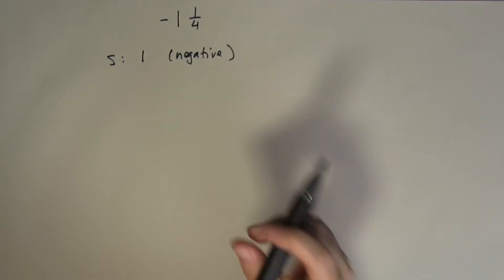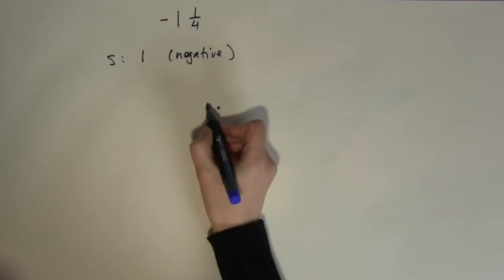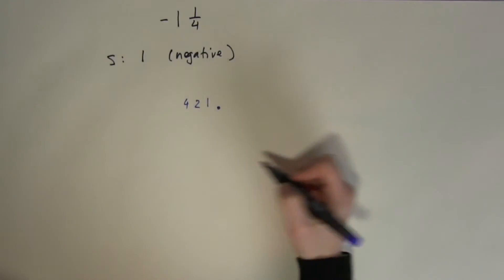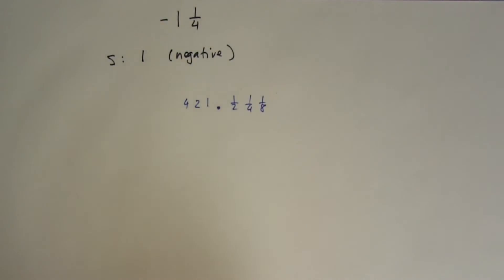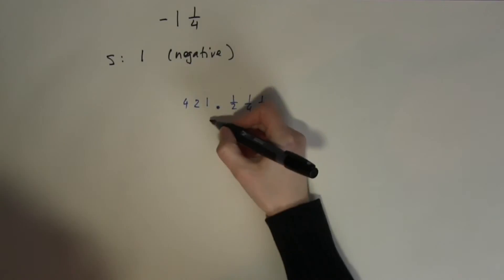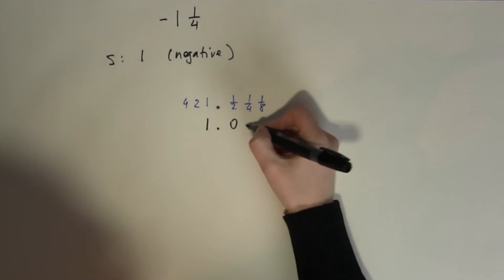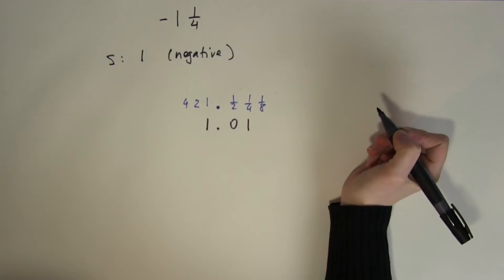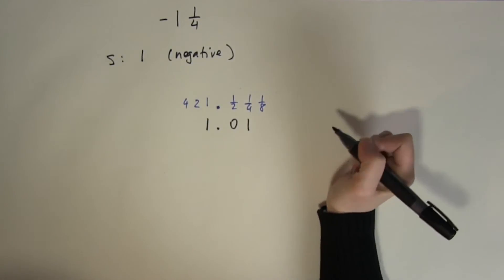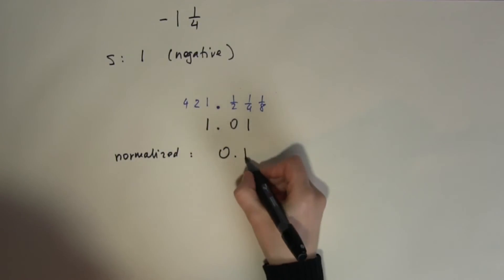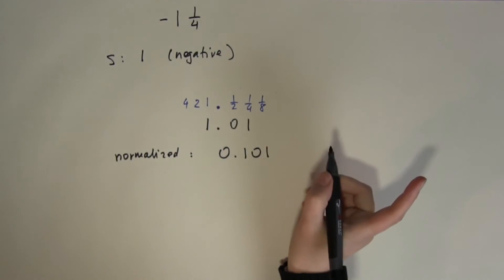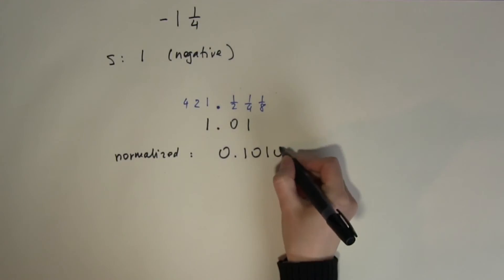Let's bring in the place values. Here is the radix point — to the left we have 1, 2, 4 for whole numbers, and after the radix point comes a half, a quarter, an eighth, and so on. I've deliberately chosen a simple example. To write 1 and a quarter in binary, all we need is 1 radix point followed by 0, 1. So this is our binary number. The normalized mantissa then will be 0.1010.